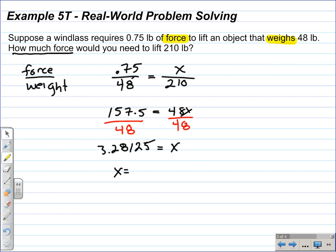So, x is equal to 3.28125. It is preferable that you put your variable on the left-hand side. Not absolutely necessary. But it is preferable.